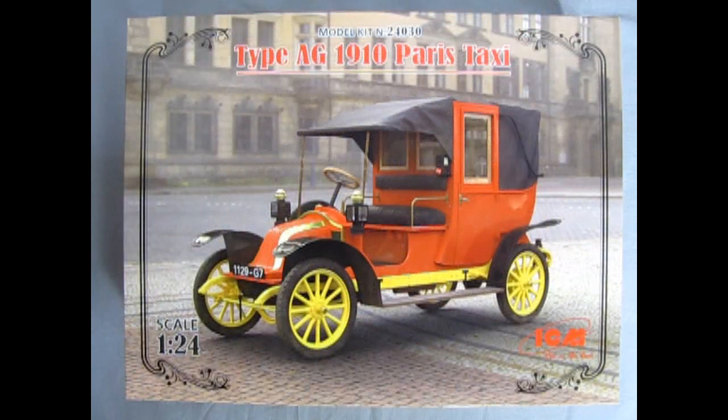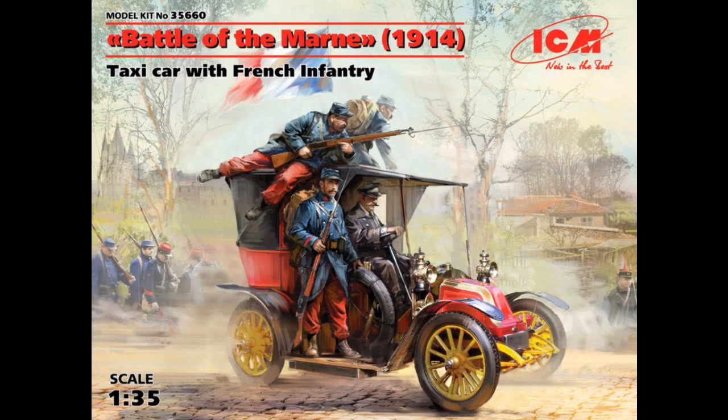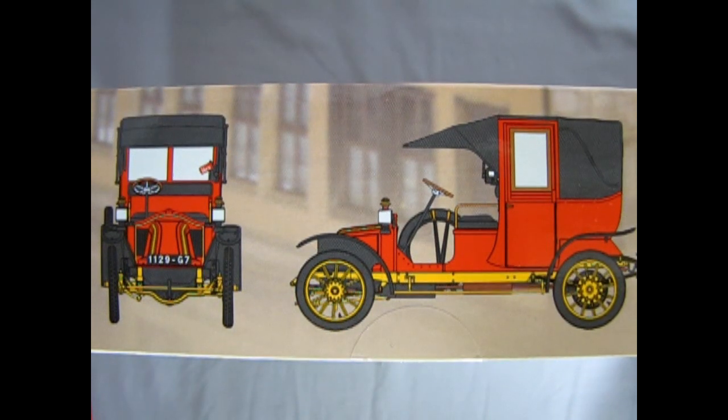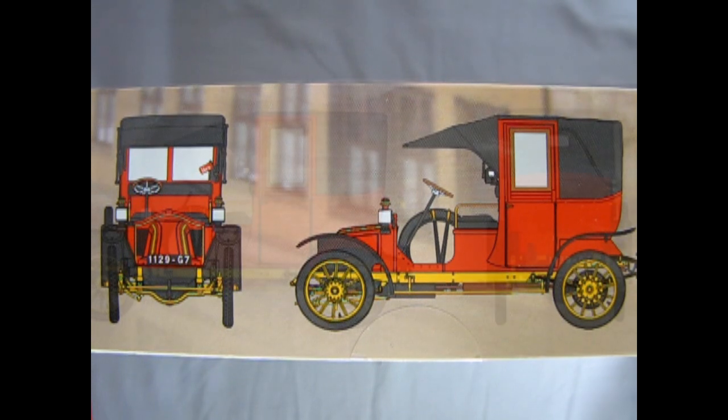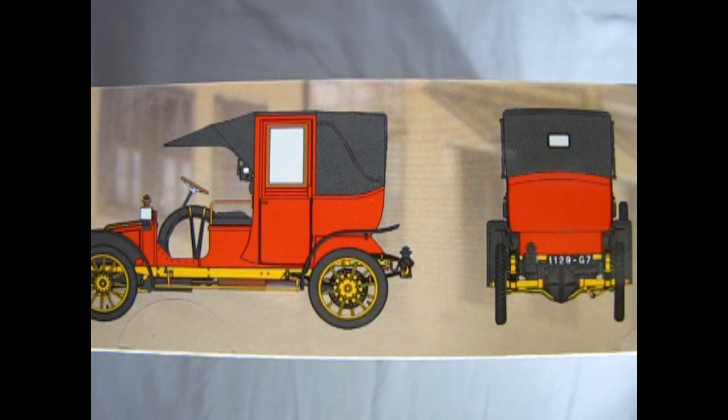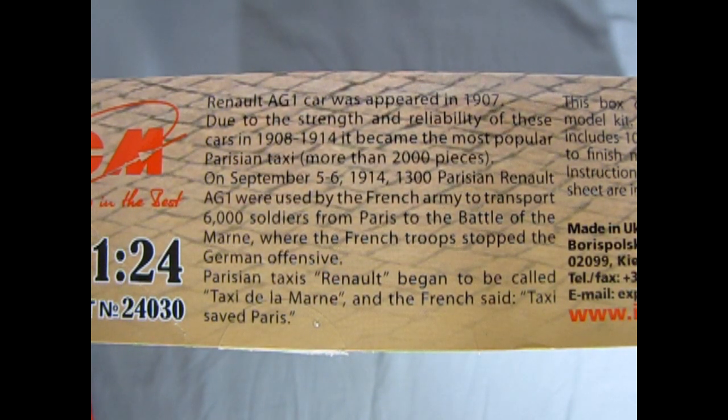This model kit is a scaled up version of ICM's 1:35 scale World War I French taxi, seen here. The side of our box shows an illustration of the taxi from the front view and the side view, as well as the rear view. On the adjacent side, ICM has provided a write-up with the history detailing the car.